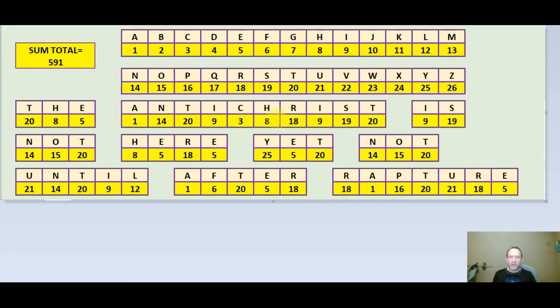The Antichrist is not here yet, not until after rapture. The sum total letter value using the English alphabet and its ordinal value is 591.